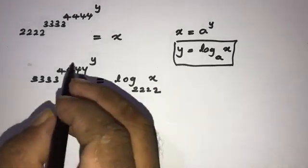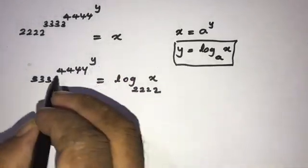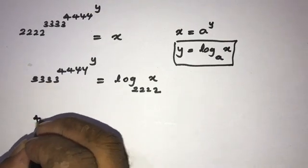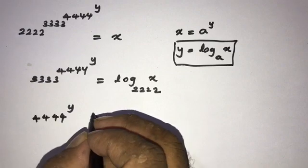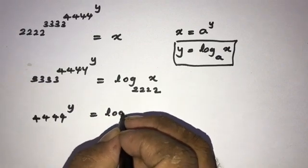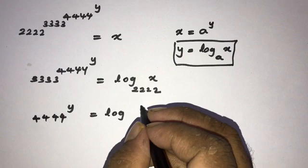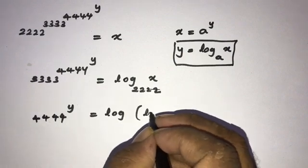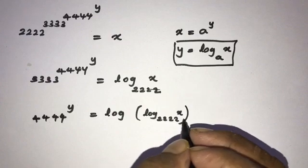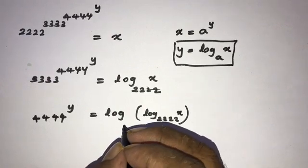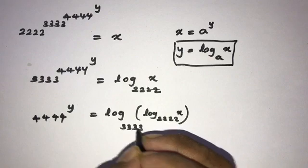apply this theory again. We can write, now the power is this term. So 4444 to the y power is equal to log of this term base 3333.